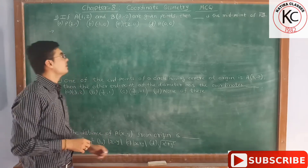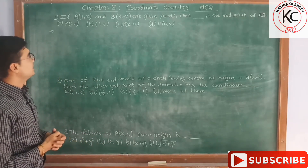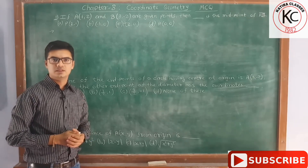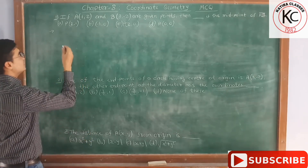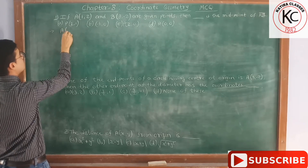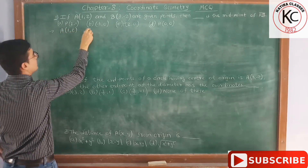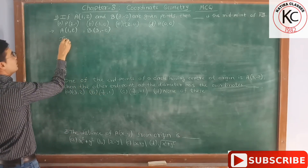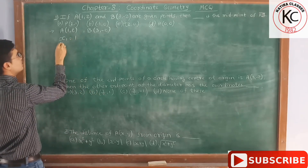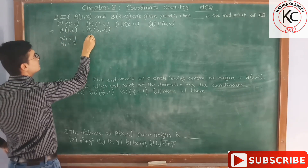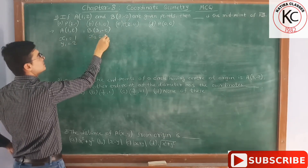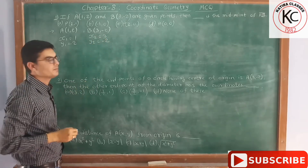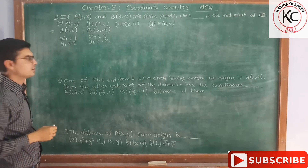The first MCQ is: if point A and B are given points, then dash is the midpoint of line segment AB. Here we are having two points A and B. As you know, x1 is 1 and y1 is 2. In the same way, x2 is 3 and y2 is minus 2. Now this sum is based on the midpoint formula.